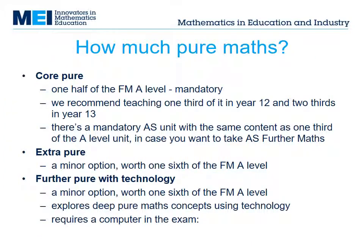For A Level Further Maths you have to take a CorePure unit worth 50% of the A Level. There are two more optional minor units in Pure Maths which you can choose if you wish. For AS Further Maths there's a mandatory CorePure unit, which has a third of the content of the A Level CorePure unit. You can co-teach AS and A Level if you teach this third in year 12 and leave two thirds of the CorePure unit till year 13.